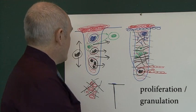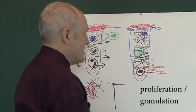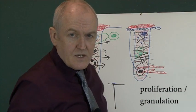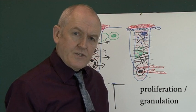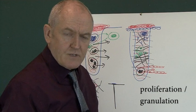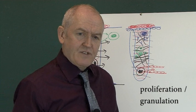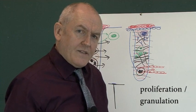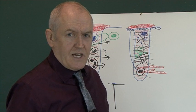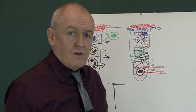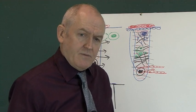We've gone from blood to granulation tissue to fibrous tissue. Wound healing starts with the inflammatory response, goes on to the destructive migratory response, then to the proliferation-granulation response, and the final stage is often called the maturation or remodelling stage of wound healing. This can go on for a year or more after a wound has initially been sustained.